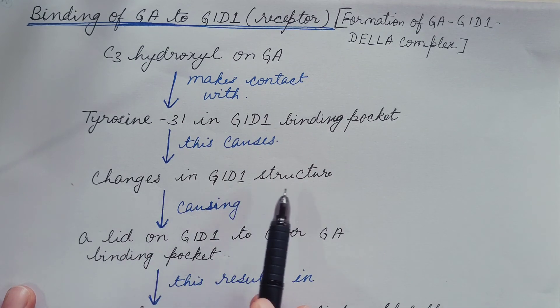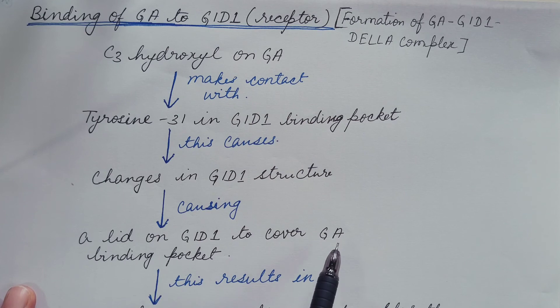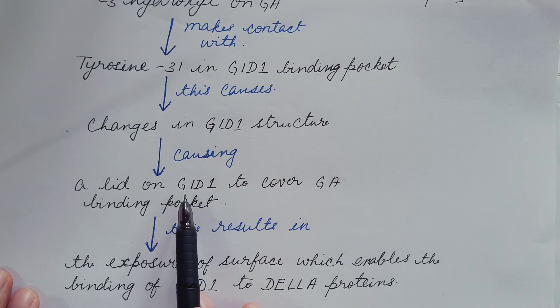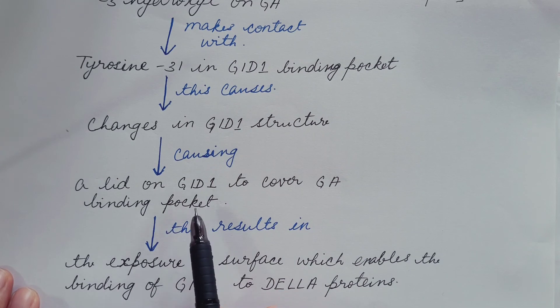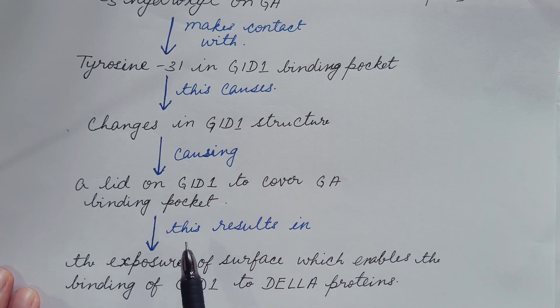This change in GID1 structure causes a lid on the GID1 to cover gibberellin binding pocket. And when gibberellin binding pocket is covered, it results in the exposure of surface